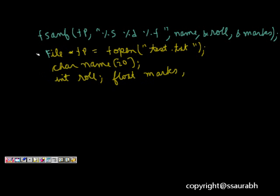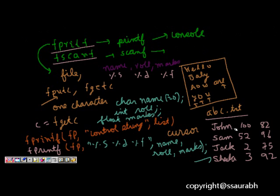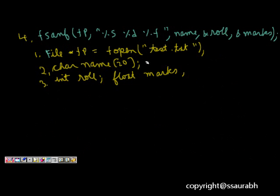So this is line 1 then 2, 3 and then this is the 4th line after which after reading the first line which is John 100 82, we will have here it will become John, this is 100 and this is 82.00. So this is what is read.